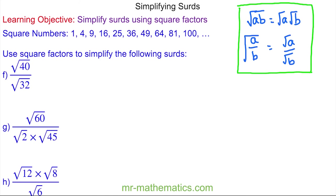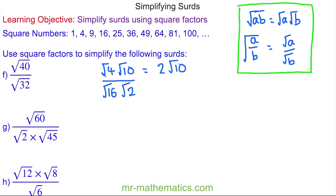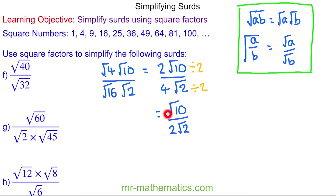For question f, we simplify the square root of 40 in the numerator: root 4 times root 10, and since root 4 is 2, we get 2 root 10. For the denominator, 16 is a square factor, giving root 16 times root 2, and root 16 is 4, so we have 4 root 2. We simplify the fraction by dividing 2 and 4 by 2, giving root 10 over 2 root 2. Then dividing root 10 by root 2 gives root 5, so the answer simplifies to root 5 over 2.